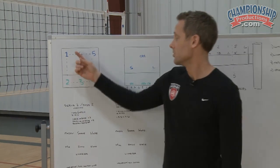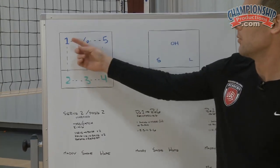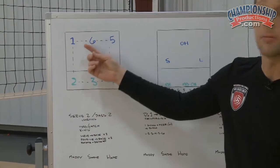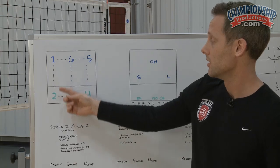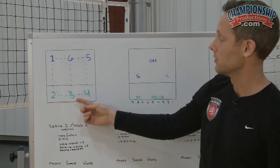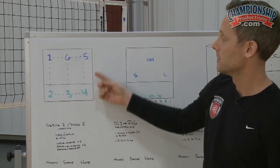What we have right here are the six locations that would be on a wheel or a lineup form. One being in the typical serving location, two being right front, three middle front, four left front, five left back, six middle back.